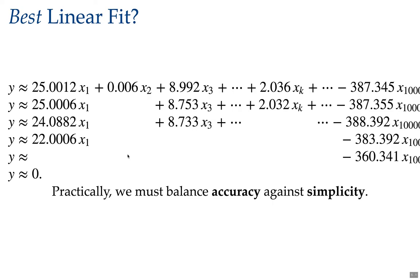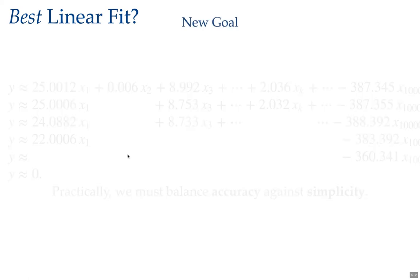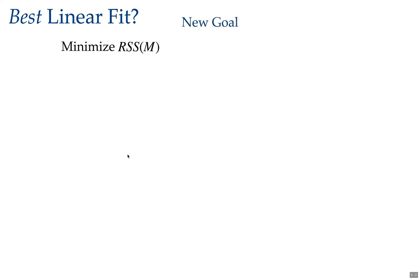What we want is a way to measure the simplicity of a model so that we can balance accuracy against simplicity. Here's our new goal: minimize the residual sum of squares error of a model M, but minimize it only among all models of a given complexity.